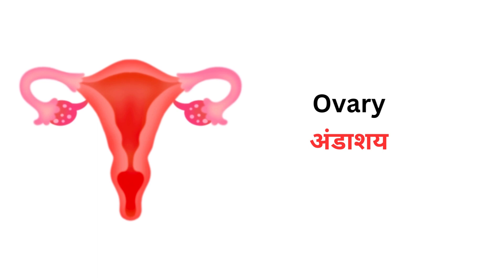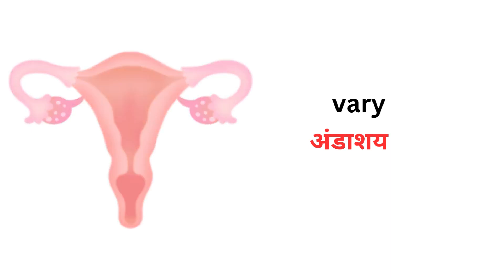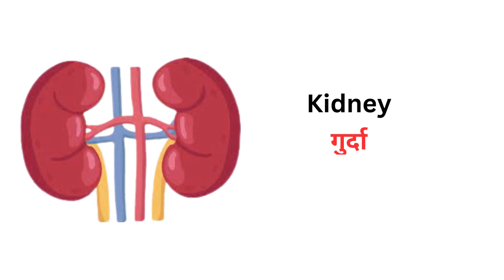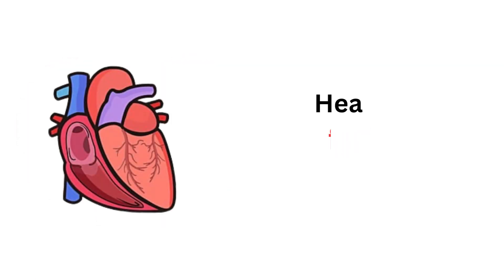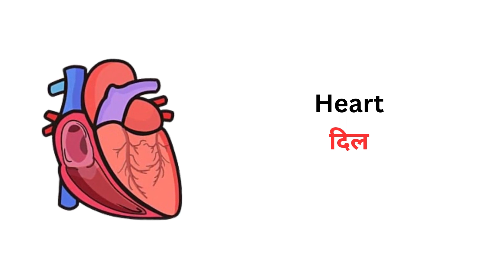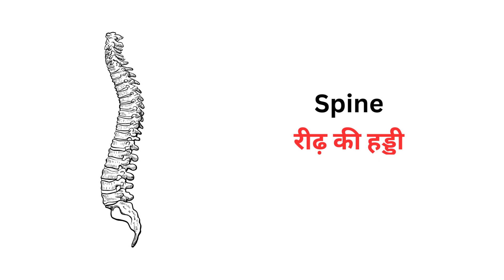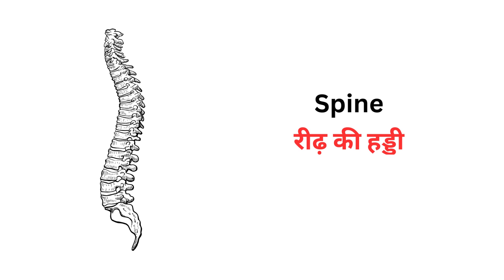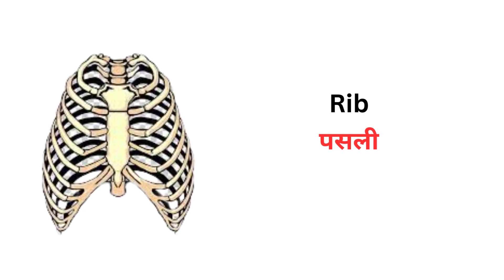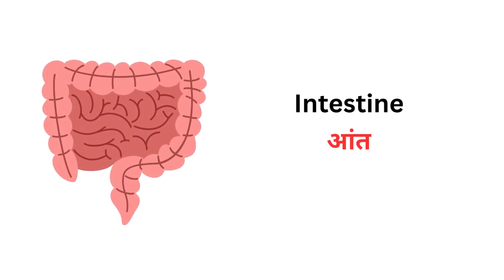Ovary को अंडाशय कहते हैं। Kidney को गुर्दा कहते हैं। Heart को दिल कहते हैं। Spine को रीढ़ की हड्डी कहते हैं। Rib को पसली कहते हैं। Intestine को आंत कहते हैं।